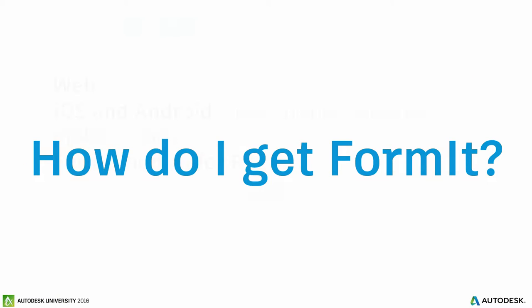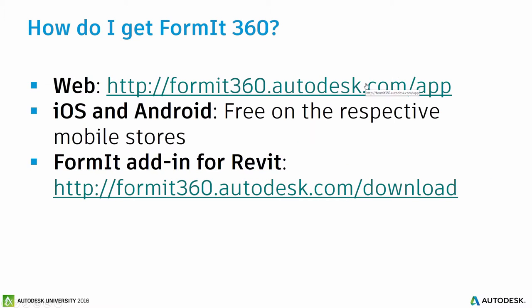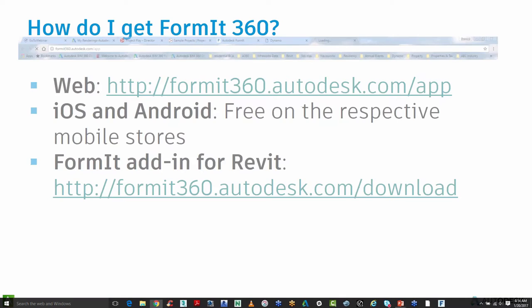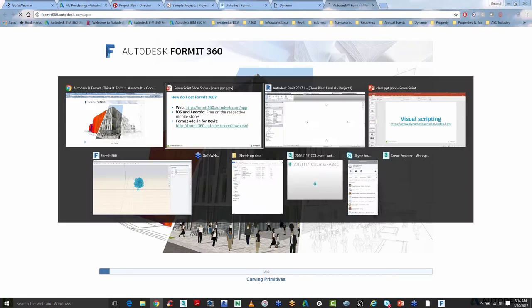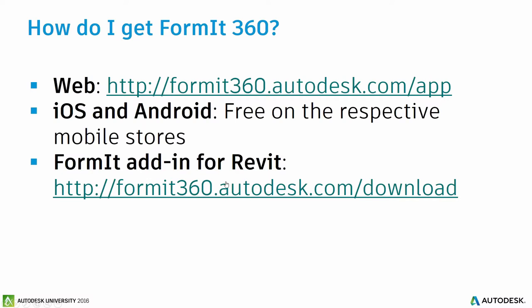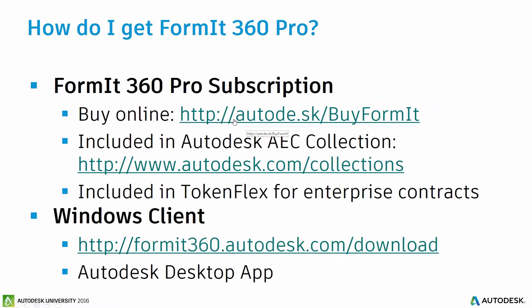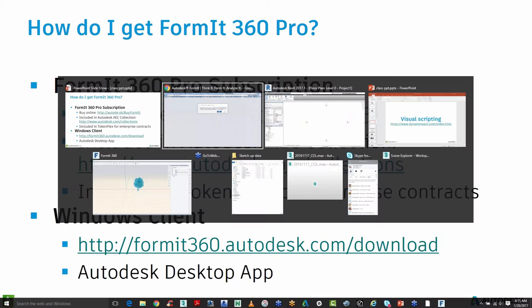To get Formit, there are a couple of ways. You can directly launch it from the web browser — it just fires up, loads everything up, and you have direct access to Formit for free. Or you can download it directly as a Windows desktop client. You can buy it online as a separate application, or get it included in the AEC Collections. If you're on an enterprise contract, you get it included as part of Tokenflex.